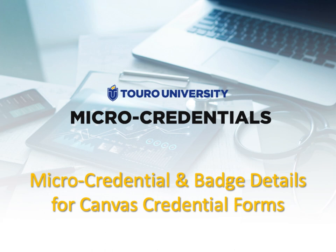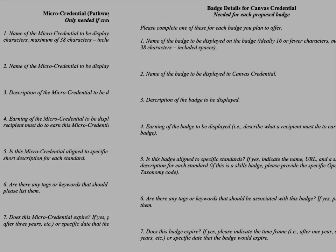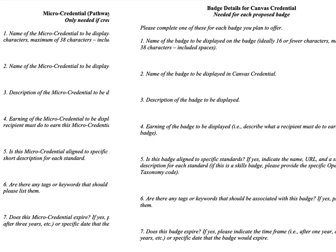This is a quick video that will go through the information that you need to provide after your micro-credential or badge has been approved, in order for us to create those items in Canvas Credential. The forms that we're talking about look something like this — the micro-credential pathway details for Canvas Credential or badge details for Canvas Credential forms.